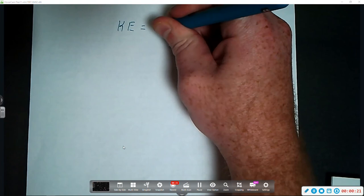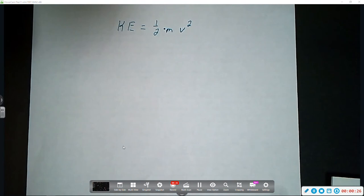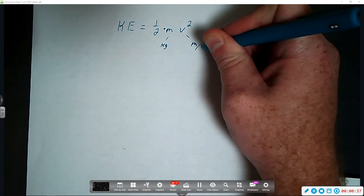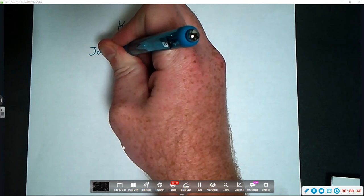So kinetic energy, the formula is one half times mass times velocity squared, one half mv squared. So the mass you're usually going to see measured in kilograms, velocity is going to be meters per second, and the unit that we use to measure kinetic energy and potential energy is joules, J-O-U-L-E-S, joules.